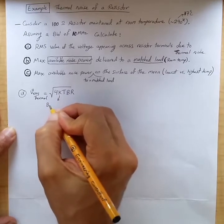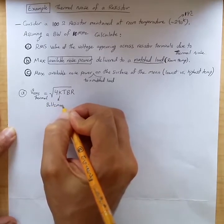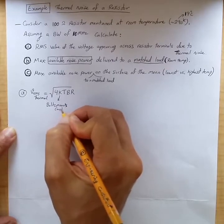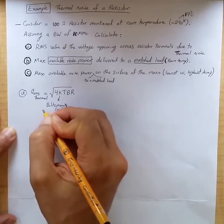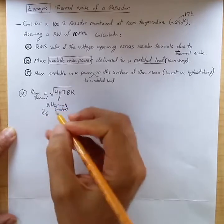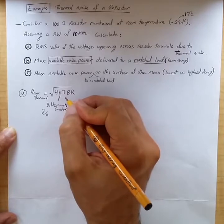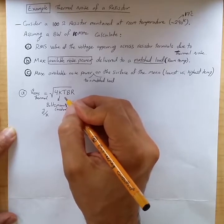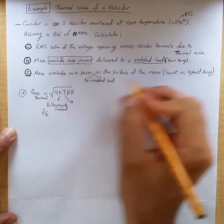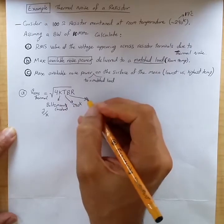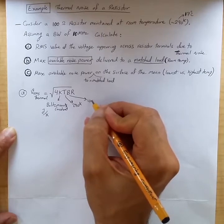This is Boltzmann constant. Its dimension is joules per Kelvin. Its value is 1.38 times 10 to the minus 23. This is room temperature as given, so it's 290 degrees Kelvin. This is the bandwidth, which is given to be 10 megahertz.